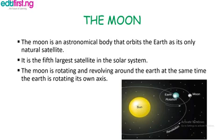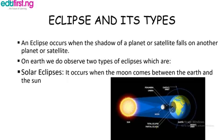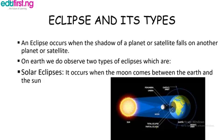Eclipse and its types: an eclipse occurs when the shadow of a planet or satellite falls on another planet or satellite. On Earth we observe two types of eclipse. A solar eclipse occurs when the Moon comes between the Earth and the Sun. Recall that the Moon is one of the satellites while the Earth is one of the planets.